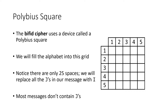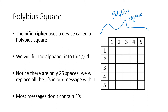Let's get started understanding what the bifid cipher is. The bifid cipher is a method that uses a device called a Polybius square. We're going to be using this square to encode and decode our messages. What we're going to do is put the alphabet into that grid.